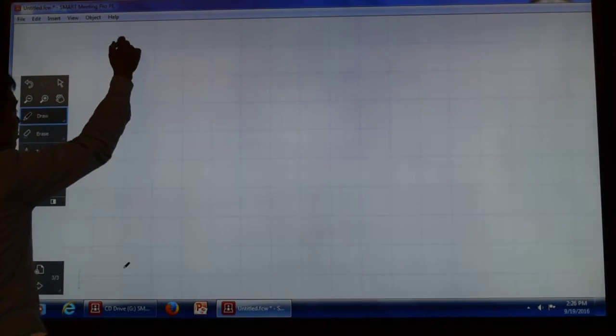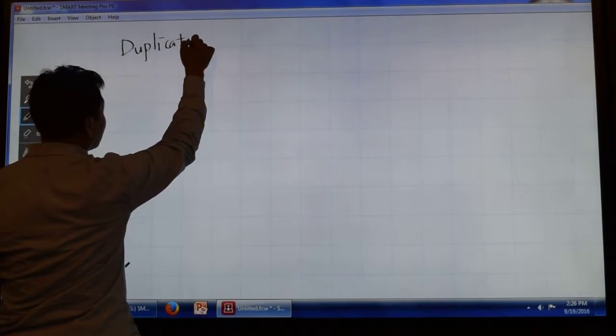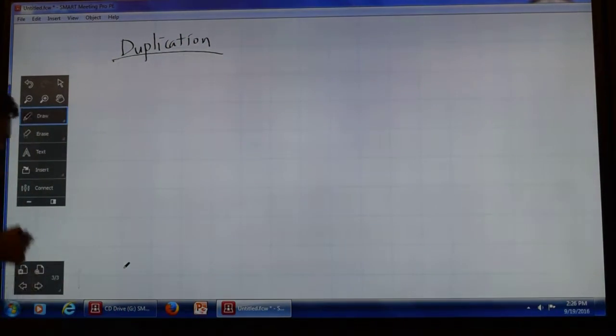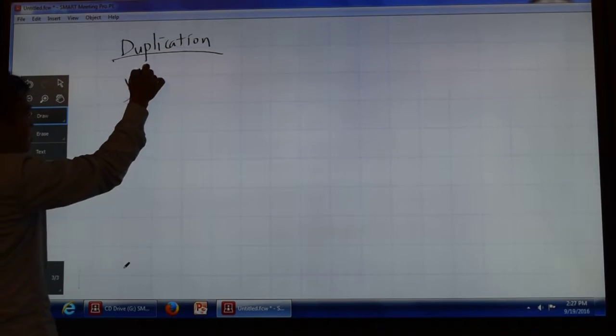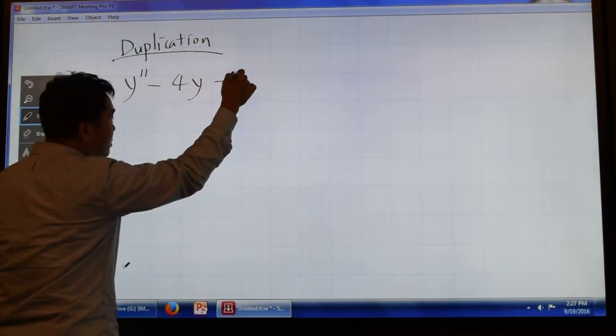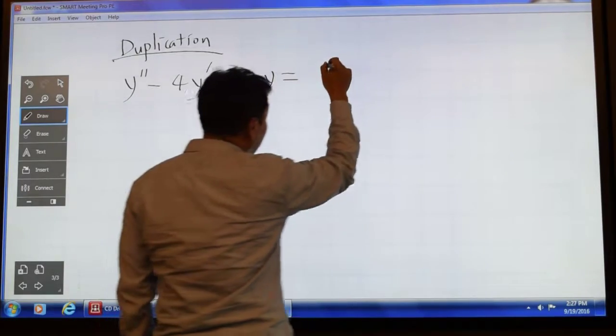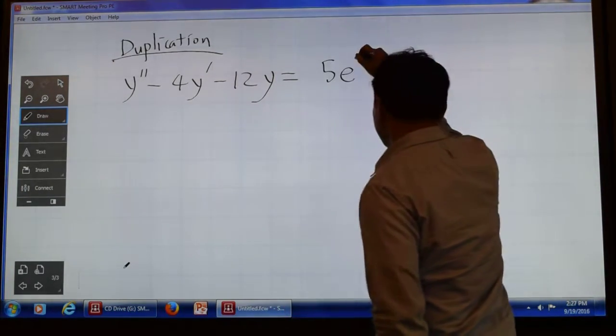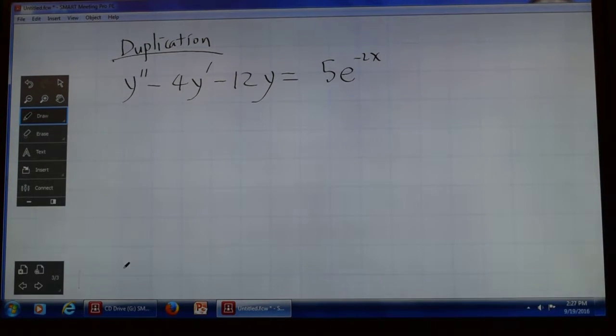Okay, we now turn into the case where you have duplication. So think about the following example. If we have y double prime minus 4y prime minus 12y equals to 5e to the negative 2x, suppose this is the differential equation we want to solve.